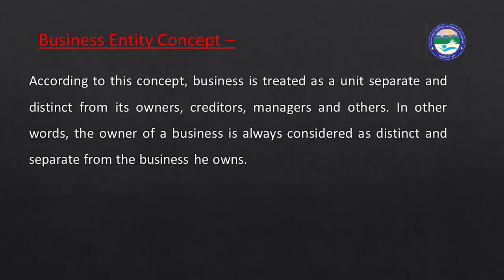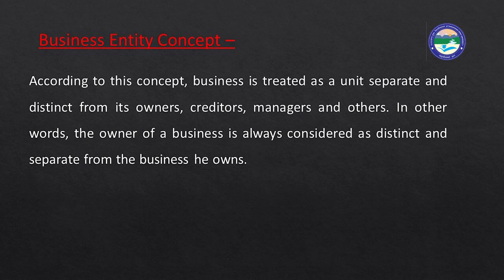Now we move to accounting conventions. The first accounting convention is the business entity concept. According to this concept, a business is treated as a separate unit and is considered distinct from its owners, creditors, managers, and others. In other words, the owner of the business is always considered distinct and separate from the business he owns. This principle is also known as separate legal entity.